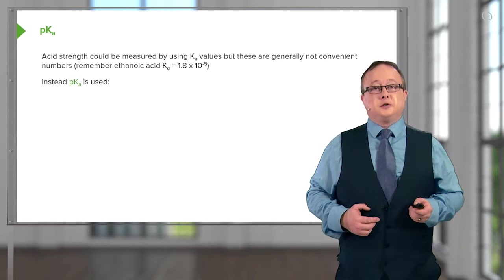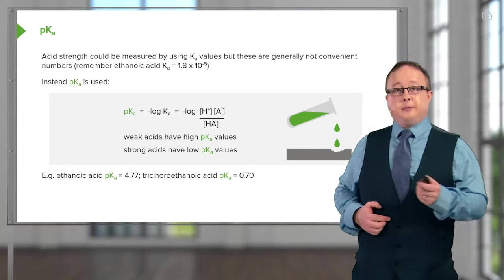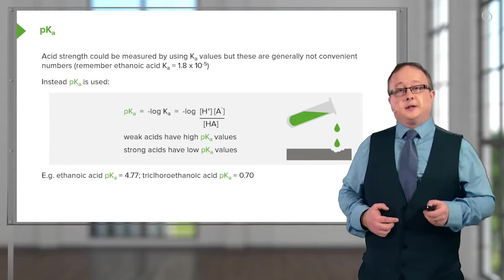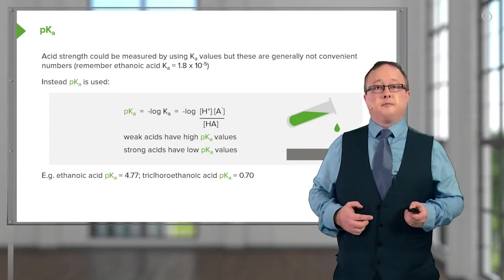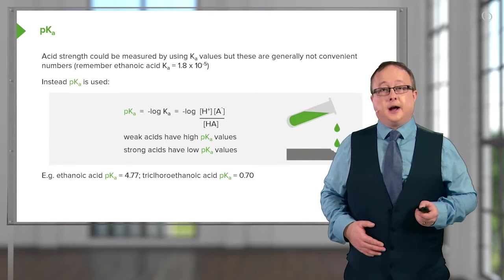As a consequence of this, pKa is used with the small letter p denoting negative log. That's all p means in this context. We take whatever the value of Ka is and then carry out the negative log to the base 10 of that value.